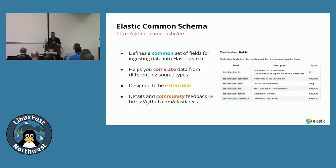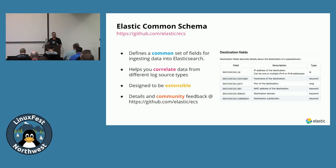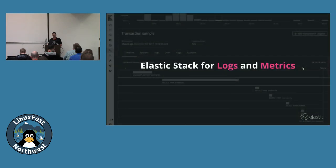Starting in version 7.0, Elastic is releasing what they call the Elastic Common Schema. This means uniformity across attribute names and field names across different systems. Whether data comes from a router, firewall, network device, SQL Server, cloud server, or web server, the attribute for a field like destination IP address or hostname will be the same across all indices. This allows cross-checking of information and ensures queries and dashboards are consistent.